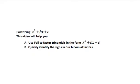In this video, we're going to be factoring trinomials where our leading coefficient is 1, meaning right out in front of this x squared term, there's a 1. If you haven't factored trinomials before, this is where you want to start because these are the simplest ones to work with. We're going to use the FOIL method to factor trinomials in this form, and we'll also take a look at some indicators so you can quickly identify the signs in our binomial factors.